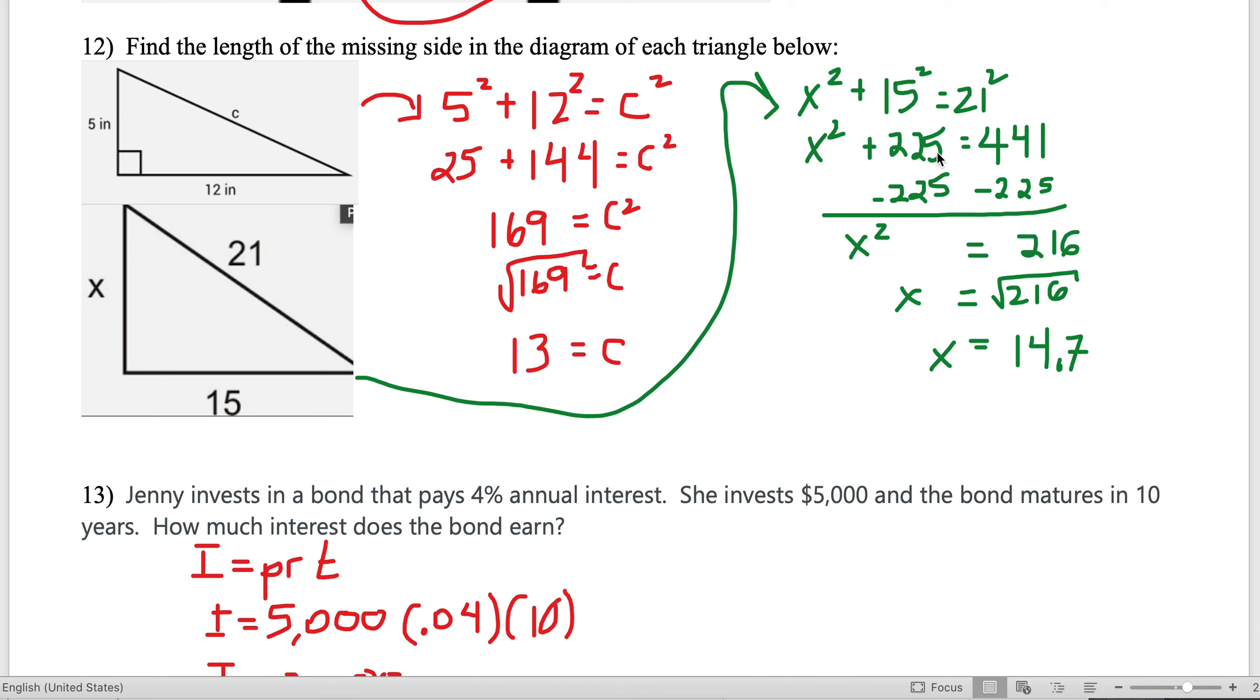For the example underneath, now it's a little different because the x is on a leg. So x² + 15² = 21², and the 21 is right across from the right angle—that's how I tell it's the hypotenuse. x² + 225 = 441. Subtracting 225, I get x² = 216, so x is the square root of 216.